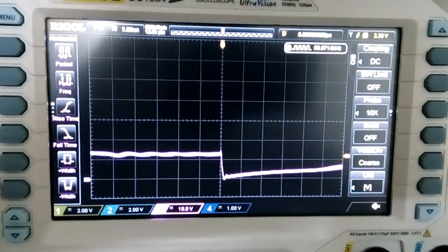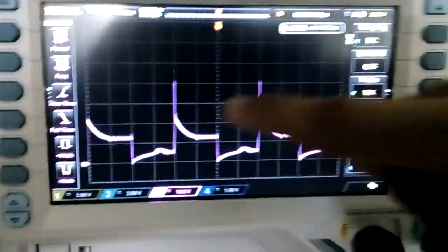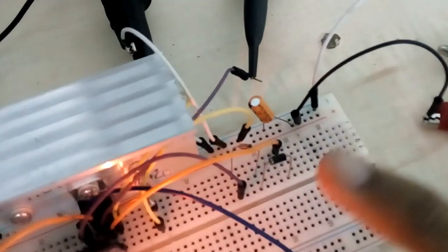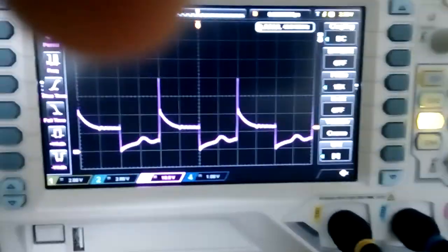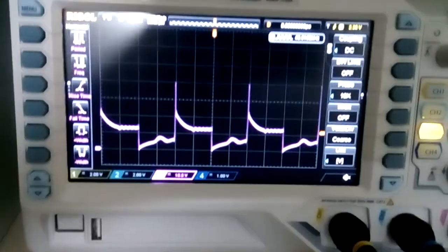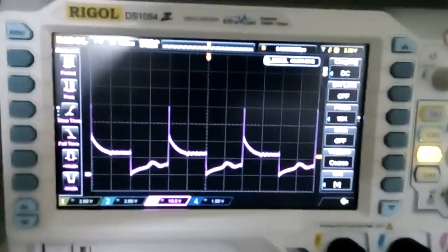And here's the drain-to-source waveform with a high-voltage peak. It's 40 volts. Even though I have a snubber, a normal diode and a zener diode, 6 volt zener, which is obviously not working.